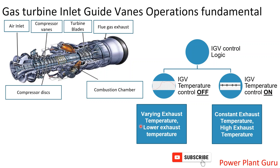If you are running an HRSG which generates steam using gas turbine exhaust gases, then you must operate the gas turbine in IGV temperature control mode ON. This is because in this mode, the IGV follows load and accordingly varies its position to maintain the exhaust temperature at the highest possible level.